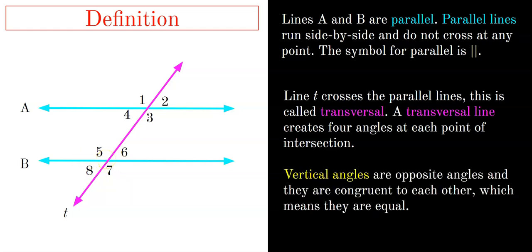By definition, vertical angles are opposite angles of each other and they are congruent, meaning they are equal. So angle 1 and angle 3 are vertical angles and are equal. Angle 4 and angle 2 are also equal by vertical angles. The same applies at line B: angles 5 and 7 are equal, and angles 8 and 6 are equal.